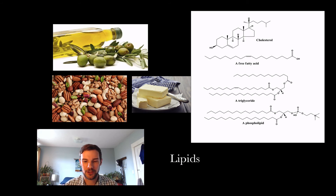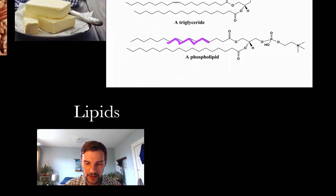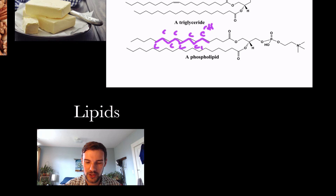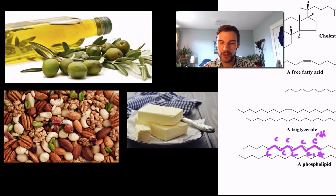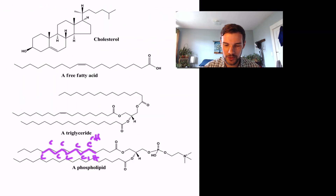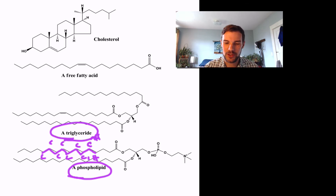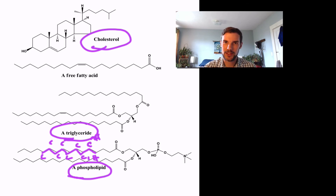Lipids are needed for energy as well and are actually a bit more efficient because they have long hydrocarbon chains — each turn in those little lines represents a carbon, with hydrogens branching off each side. Those carbon-hydrogen bonds are a great source of energy. Lipids are stored in our body as fat and come from nuts, butter, and oils. The three major lipids are: phospholipids (a protective layer around our cells), triglycerides (used for energy and storage), and cholesterol (used in cell membranes to regulate temperature and fluidity).